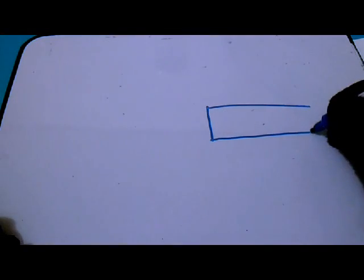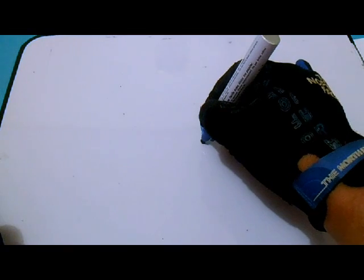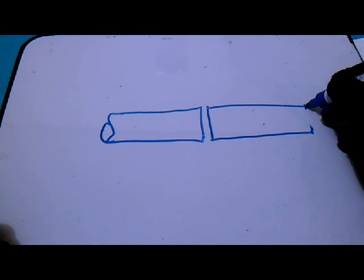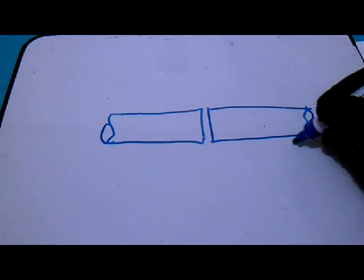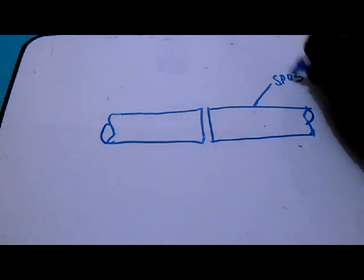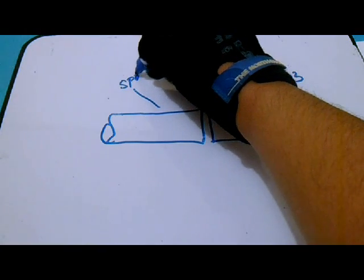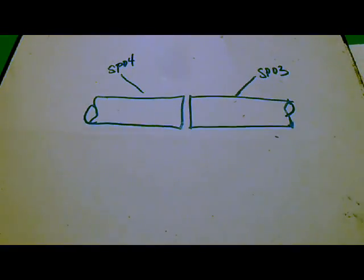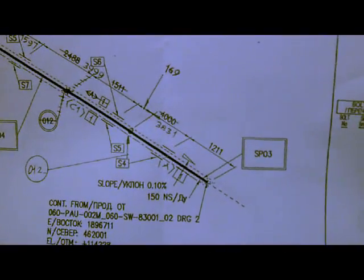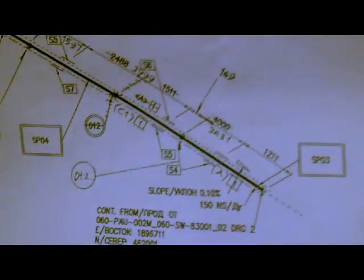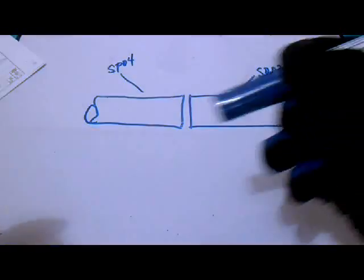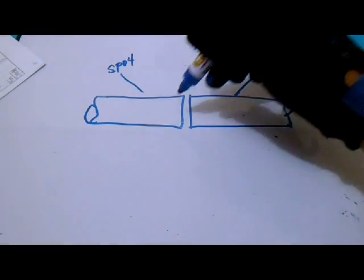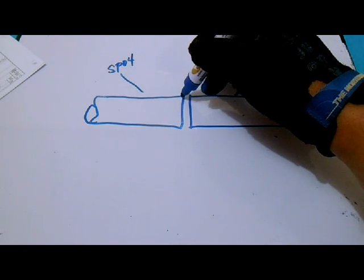This is the straight pipe. From the drawing we have spool 3 and spool 4. From our isometric, let's check again. Spool 3 and spool 4, our joint is joint 12. This is our joint 12. We will fit up spool 3 and spool 4 after cleaning all the bevel.